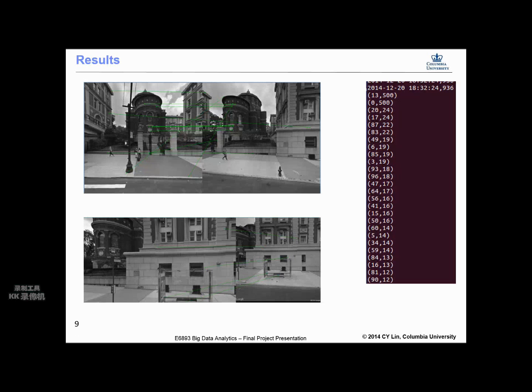Here on the right, it is a screenshot of the result, the Pig script. For each hash value, the first number means the image ID in the database, and the second one means how many features with same hash value shared between this image and the query image. For example, for this 13 and 500, the first entry, it means image 13 has 500 features same with the query image.